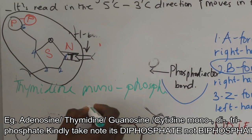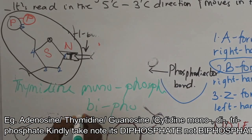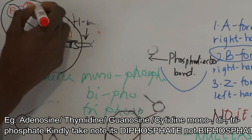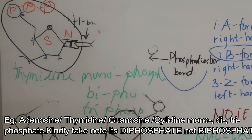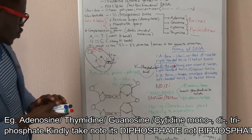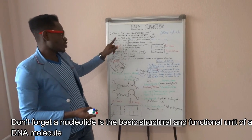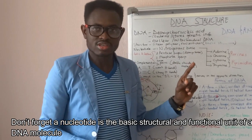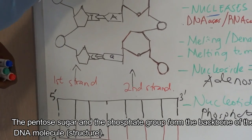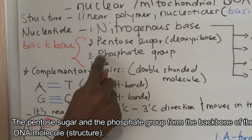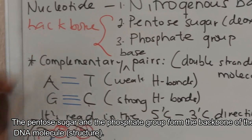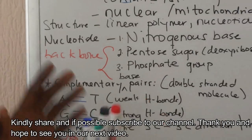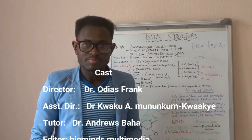If there are two phosphate groups we call it a diphosphate — for example, thymidine diphosphate. If there are three, we call it a triphosphate, and so on. Remember that a nucleotide is the basic structural and functional unit of a DNA molecule. The pentose sugar group and the phosphate group together form the backbone of the DNA structure. That's basically it when it comes to DNA structure.